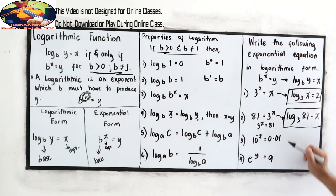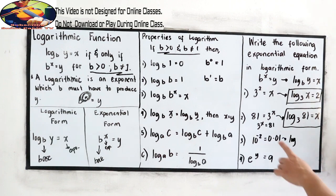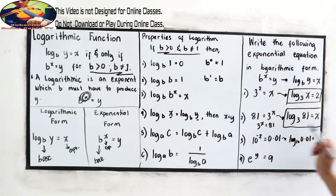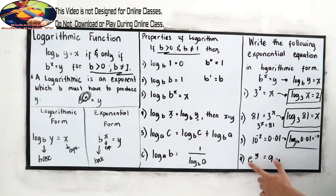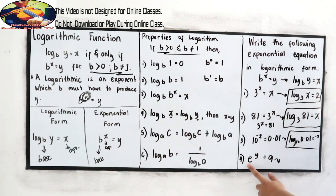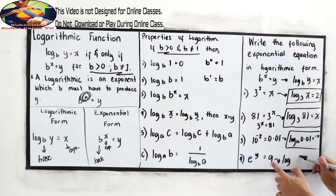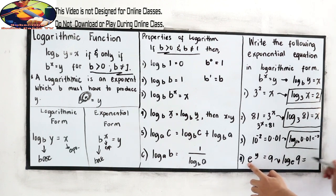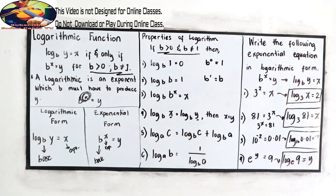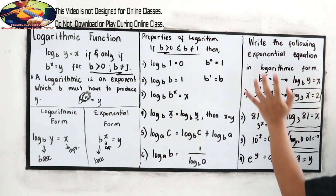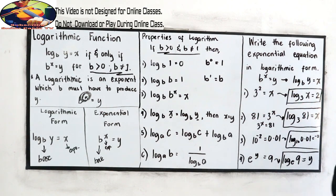Number 3: 10 raised to negative 2 is equal to 0.01, so log 0.01 base 10 is equal to negative 2. For number 4, if you want to try it, pause the video then resume to check your answer. The answer is: log 9 base e is equal to 1. This is how to transform from exponential form to logarithmic form.